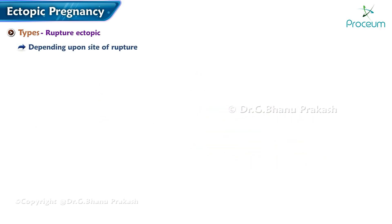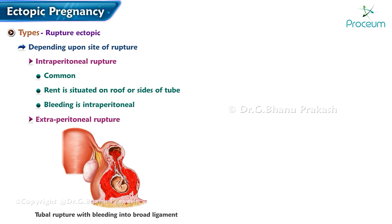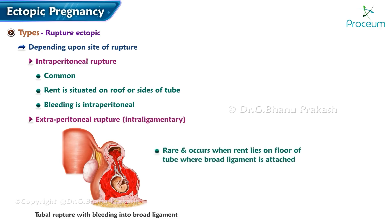Depending upon the site of rupture, it is classified as intraperitoneal rupture — common, where the rent is on the roof or sides of the tube and bleeding is intraperitoneal — or extraperitoneal (intra-ligamentary) rupture, which is rare, occurring when the rent lies on the floor of the tube where the broad ligament is attached, commonly in isthmic implantation.